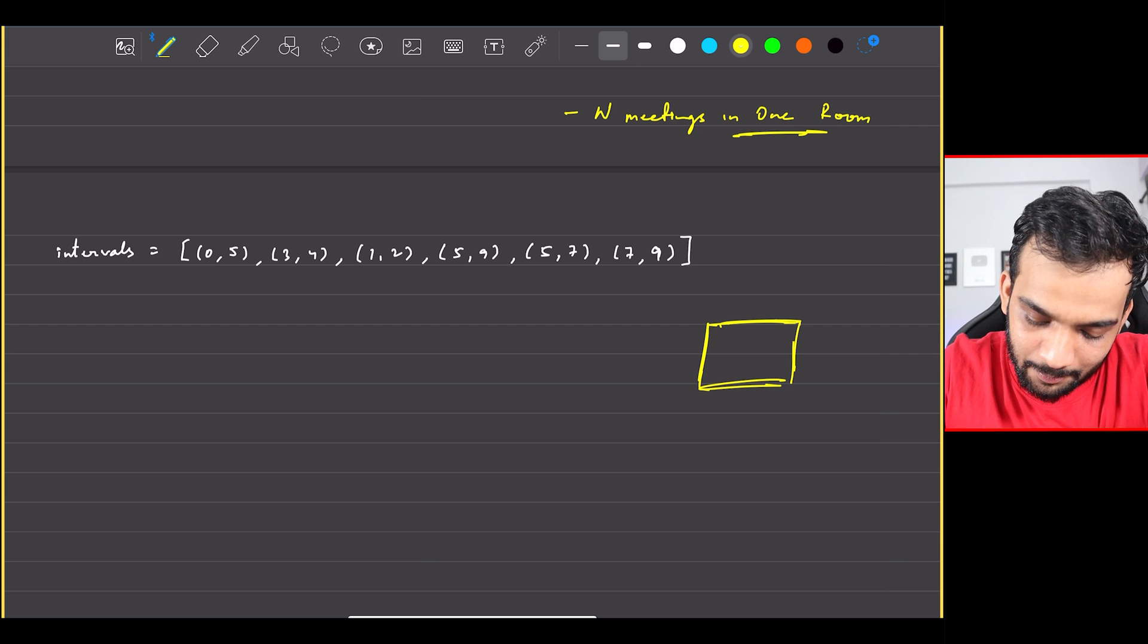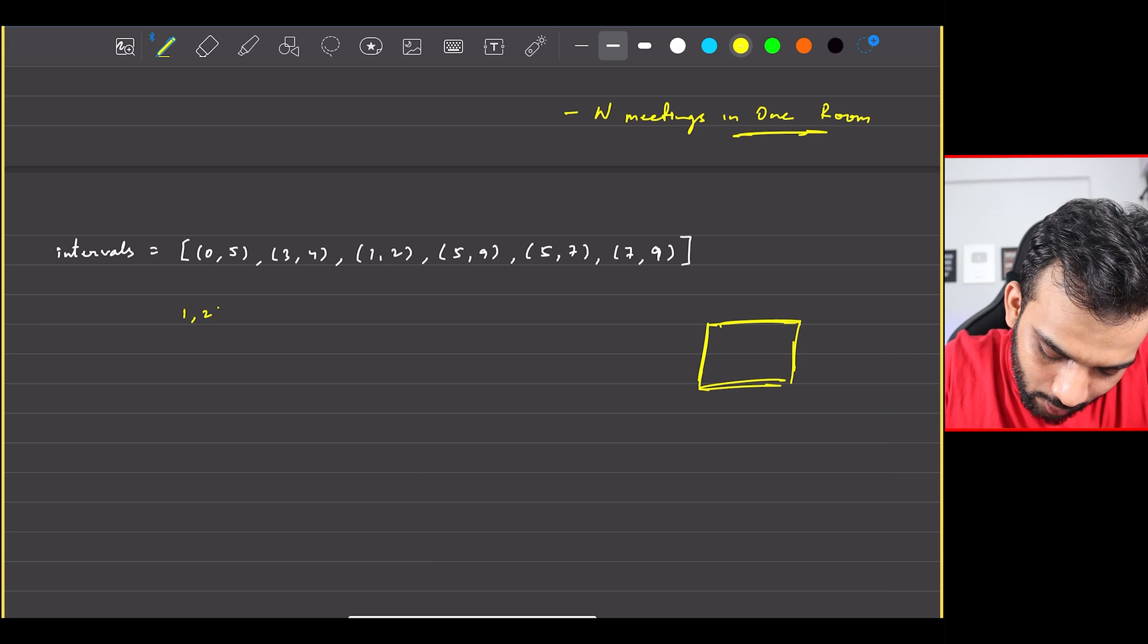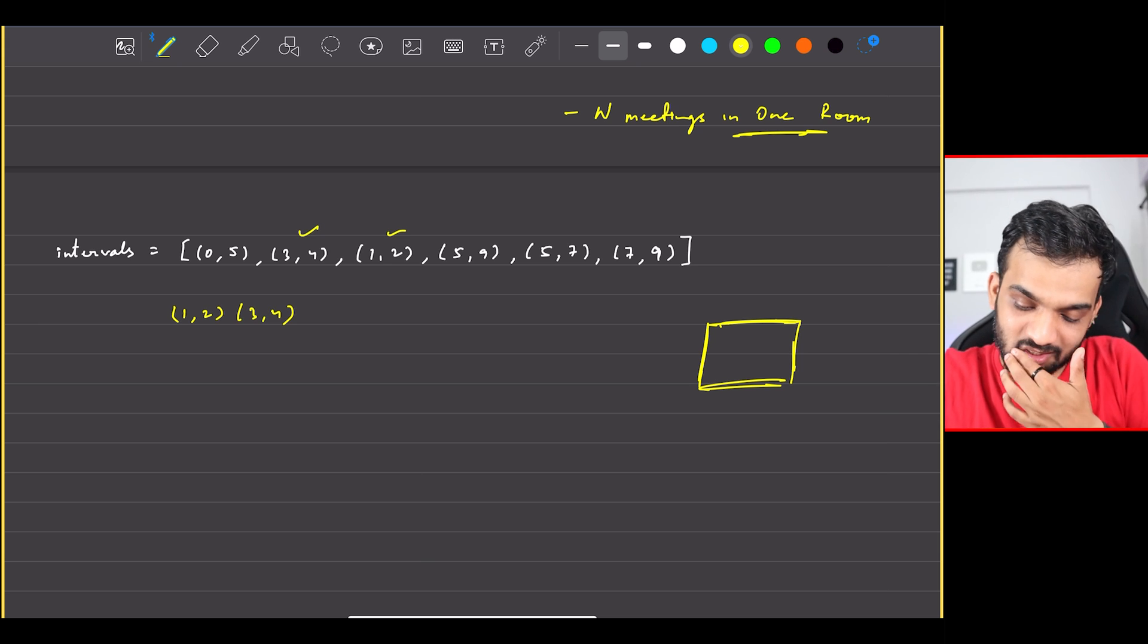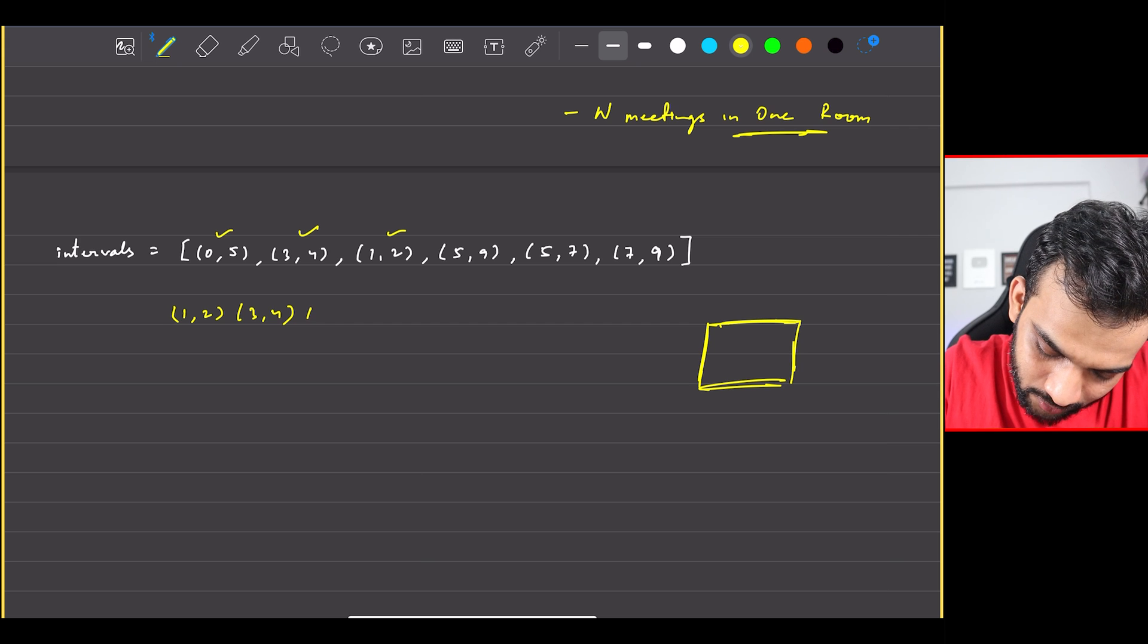How did we solve it? It's very simple, isn't it? What we did was we arranged everything by the end time. That means initially the first one is (1,2) which is this, then there is a (3,4) which is this.